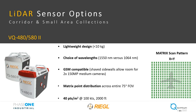The VQ 480 and 580 sensors add increased range performance in a lightweight and compact design, available in either 1550 or 1064 nanometer wavelengths. They are an excellent entry-level sensor, extremely versatile for corridor and small area collections. Their unique form factor with shaved sides allows for drop-in fitment to a GSM and the addition of two strap-on cameras for co-collection of four-band imagery, similar to the VUX 240, with a 75-degree field of view and matrix scan pattern with maximum point density in the interior of the scan.